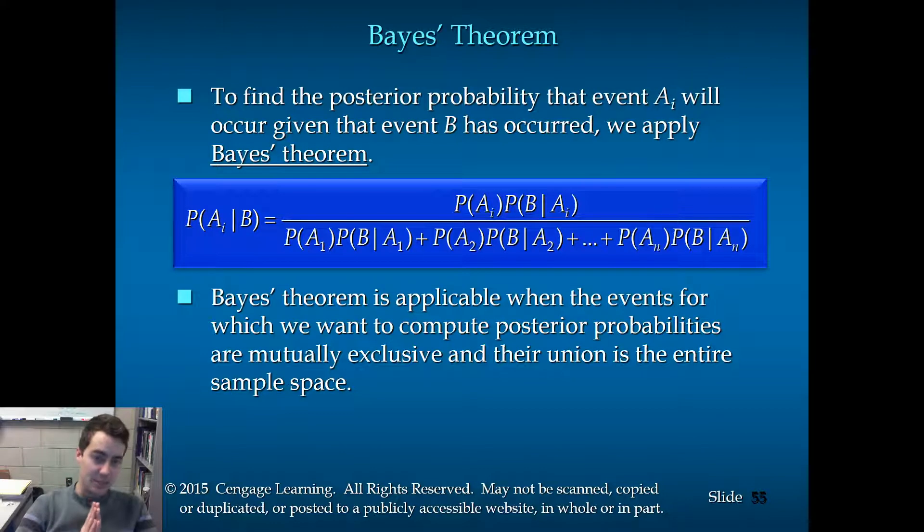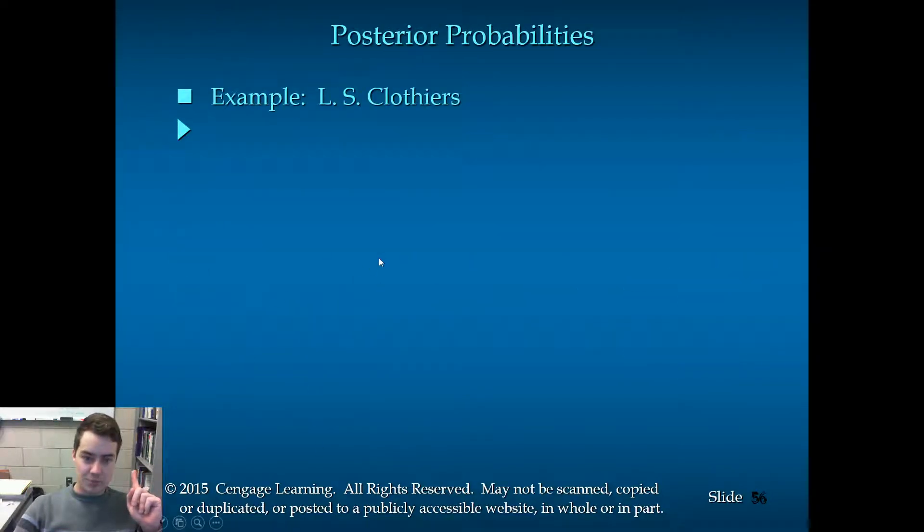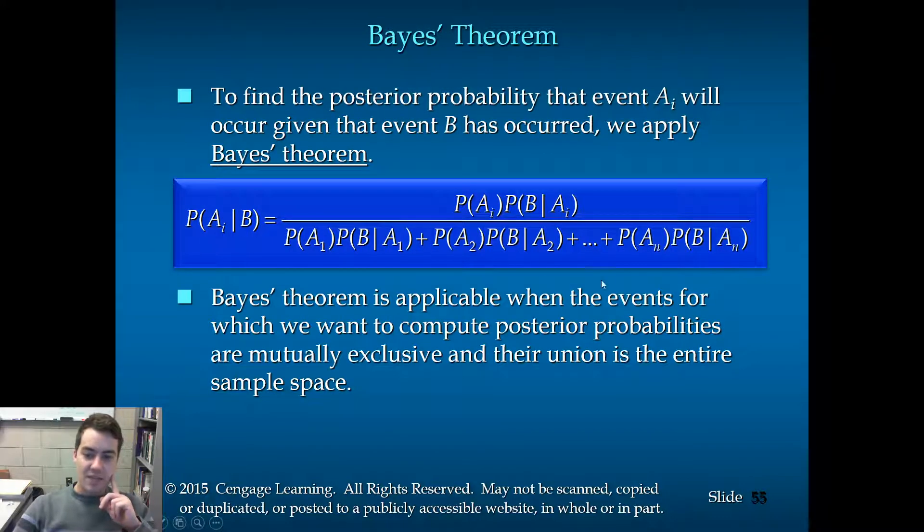But this is not as bad as it looks. And it's kind of like the variance formula where you just need a big table. Or in the case of this example problem, a small table actually will do. Now, as a caveat, there are two criteria that have to exist before we can use Bayes' theorem. Number one, the events for which we want to compute posterior probabilities, they must be A, mutually exclusive, and B, their union must be the entire sample space. So those two things must be the case.